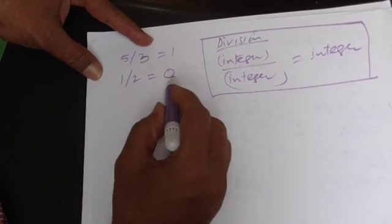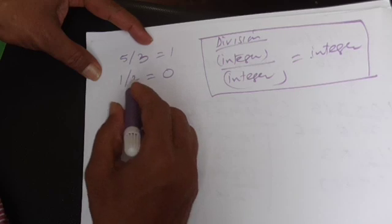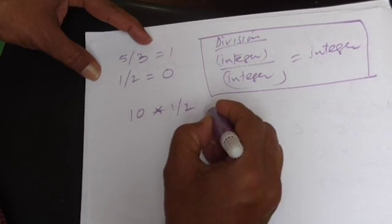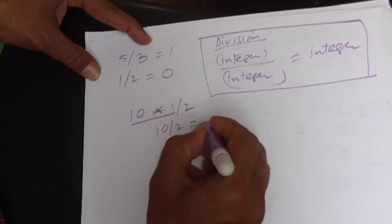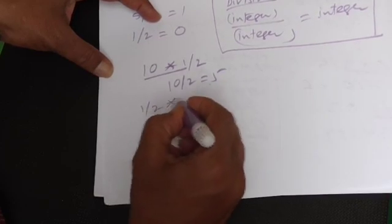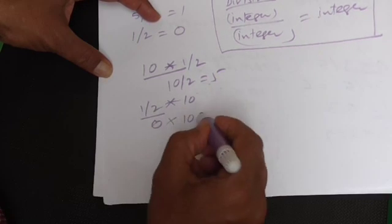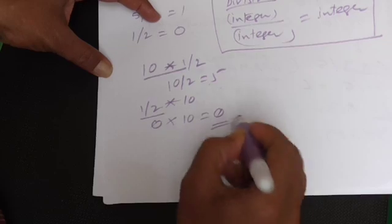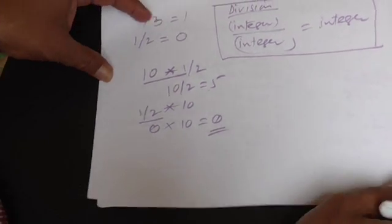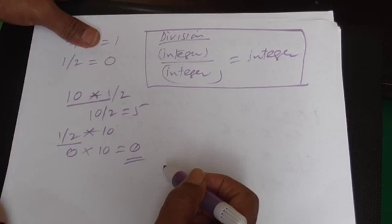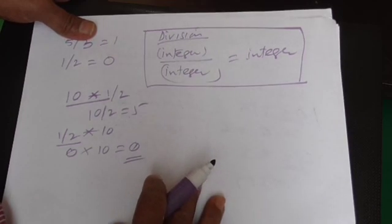Writing 1 by 2 is 0. It is very important. If I write 10 into 1 by 2, so 10 into 1 is 10 by 2, it is 5. But if I write 1 by 2 into 10, 1 by 2 is 0, so 0 into 10 is 0. What I mean to say is, in the beginning, one has to be very careful whenever you are dealing with the evaluation of C expressions.